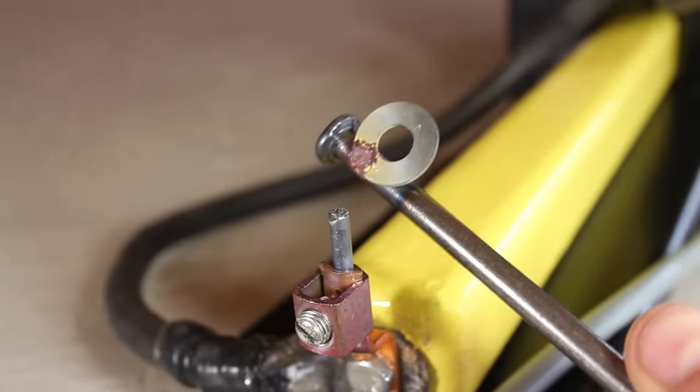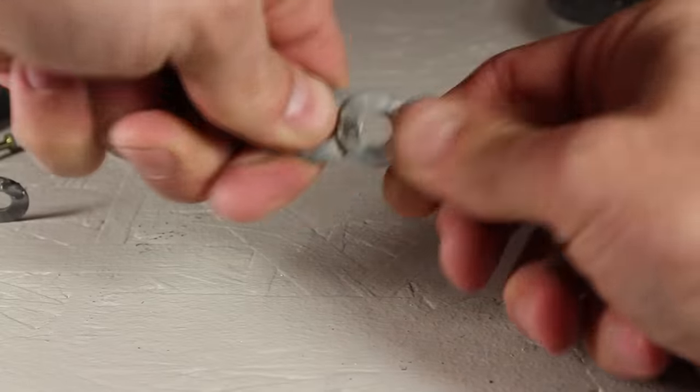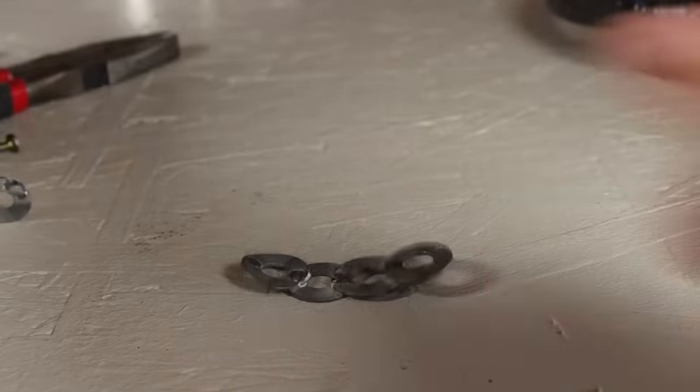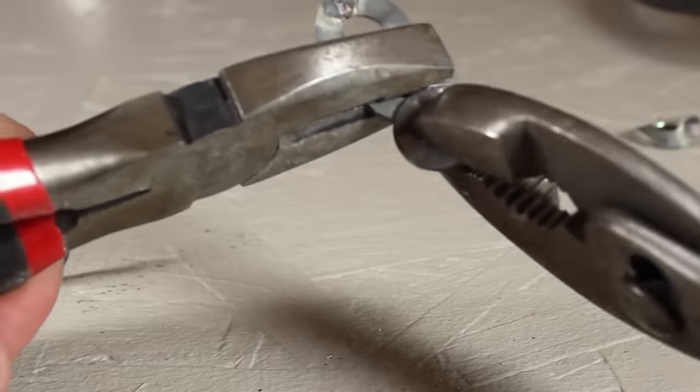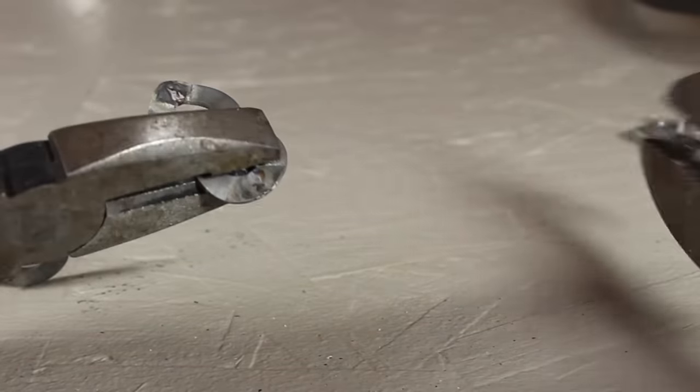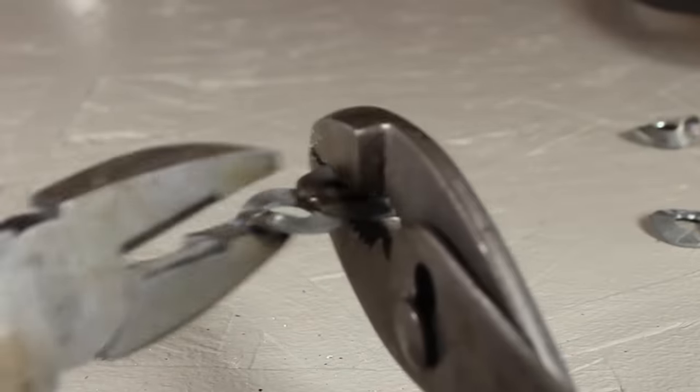Surprisingly it even worked on thicker welds, like melting a washer to this steel spike. Trying to break them apart by hand was a fruitless effort. So I tried using pliers, and even that was a bit of a challenge, but I got it. That just goes to show the welds are pretty strong.